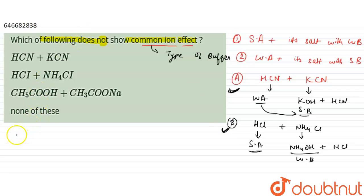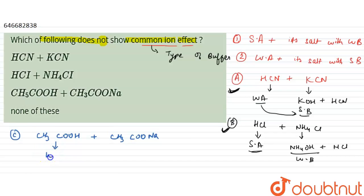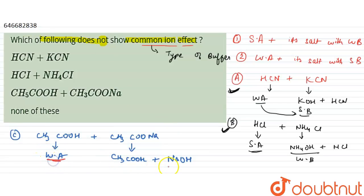In Option C, we have CH3COOH plus CH3COONa. Acetic acid is a weak acid, and CH3COONa is formed from CH3COOH plus NaOH. Since acetic acid is a weak acid and NaOH is a strong base, this follows the second condition. So Option C also gives the common ion effect.